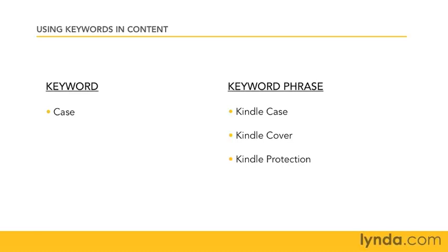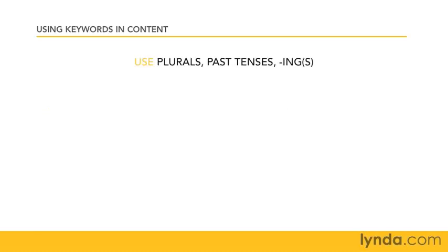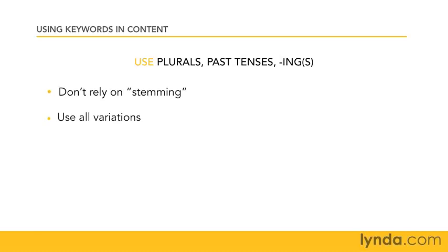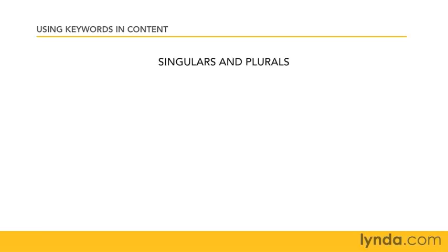Another way to make sure your content provides the most search engine benefit is to use all different forms of your words, such as past tenses, -ing forms, and so on. You probably noticed in your keyword research that all different forms of your phrases are searched at the engines. While search engines do what's called stemming — bringing up plurals when someone searches for singulars and vice versa — it's best not to rely on this. Instead, use all the different variations on the page. The great thing about writing this way is that it makes your copy read naturally, as it's not as repetitive as it would be if you were using just one form of the phrase.